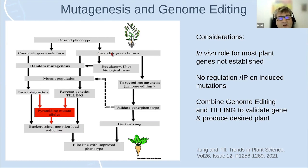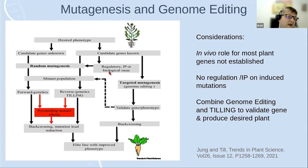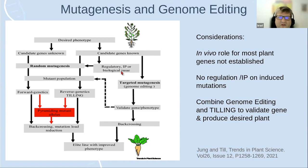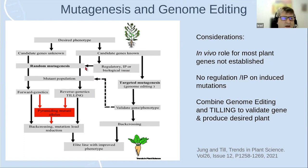If you do know strong candidate genes, you can choose between CRISPR or random mutagenesis and TILLING. What might affect your decision: biological issues — in some plant species, it's still hard to transform them and get CRISPR working, which takes quite a bit of time. That constraint may push you toward mutagenesis, and so far we've been able to mutagenize pretty much anything.